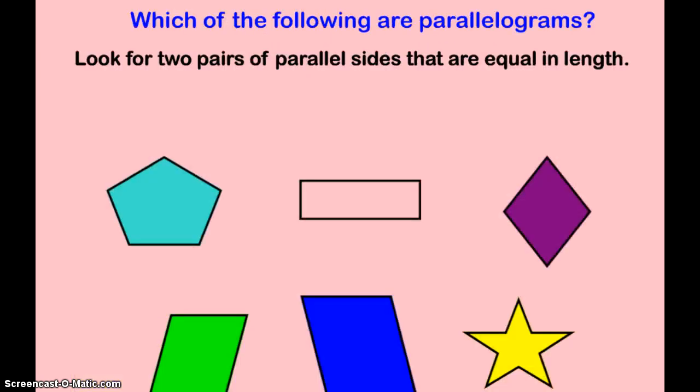So since a parallelogram is any shape with two pairs of parallel sides that are equal in length, a lot of these shapes can be called a parallelogram. I might look at this shape right here and instantly say, oh, that's a rectangle.